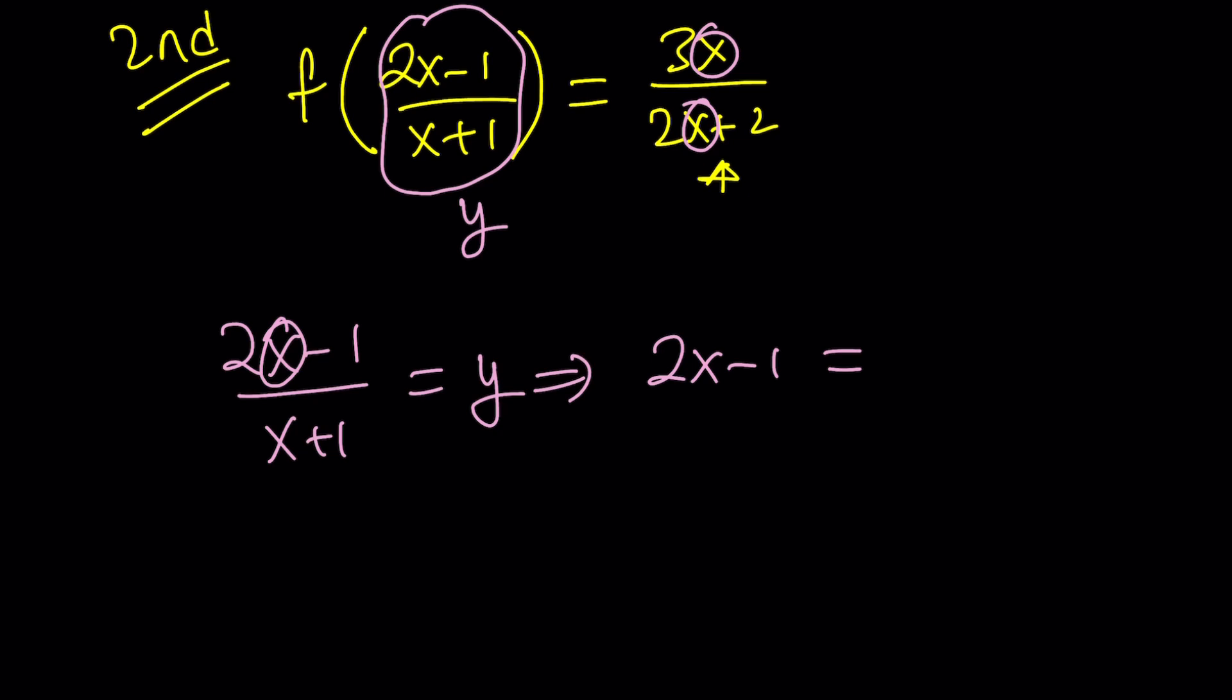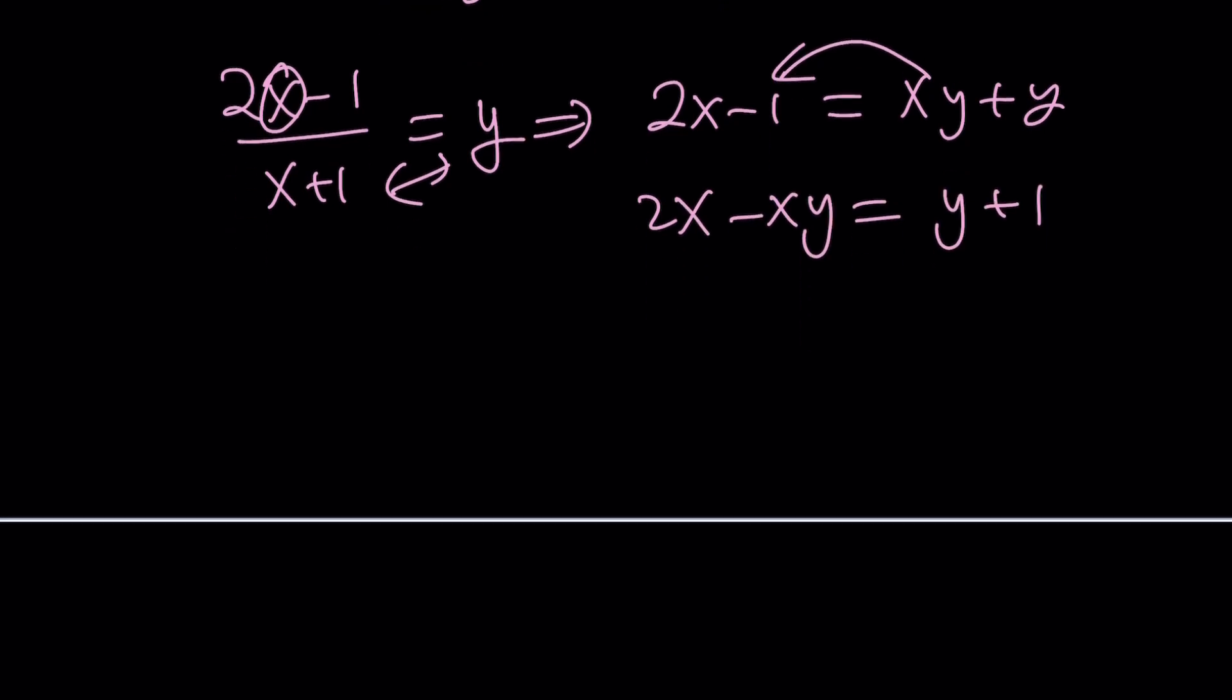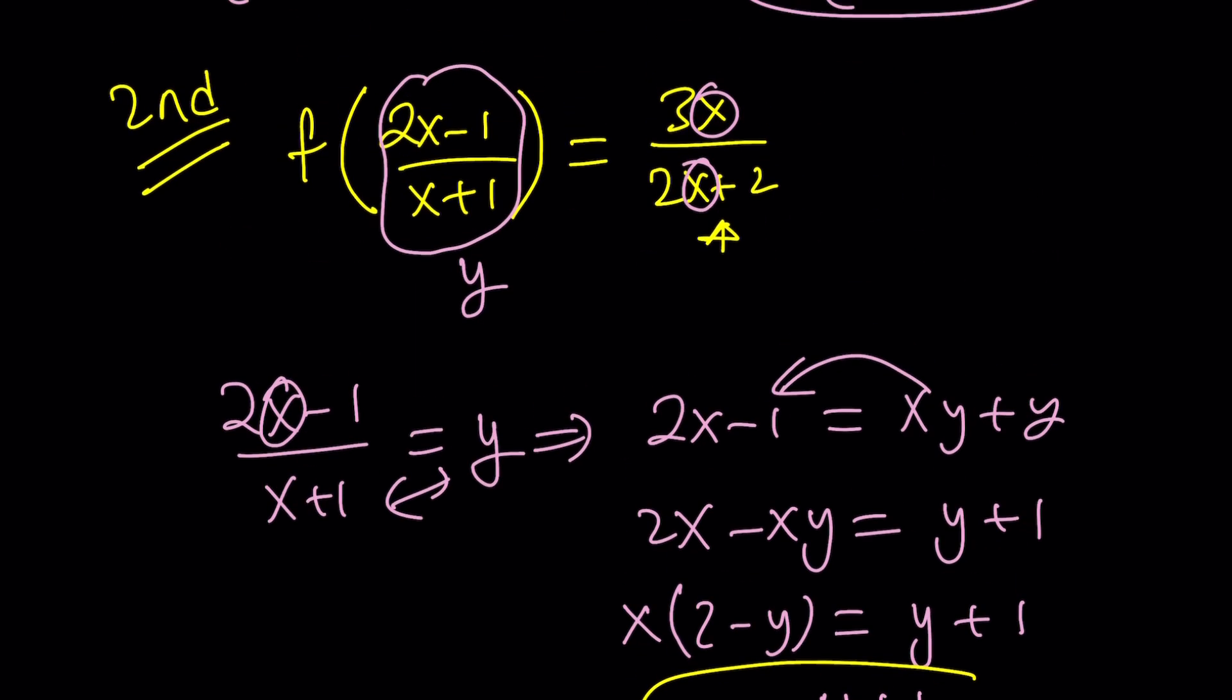So x minus 1 is equal to x, y plus y. Distribute. And then here, I want the x terms together because I'm supposed to solve for x. And it's going to look like this. And now I want to factor out x. 2 minus y over y plus 1. And then isolate x by division. And you'll get that. That's what I was trying to get. So now I got x in terms of y, which is something I can substitute.